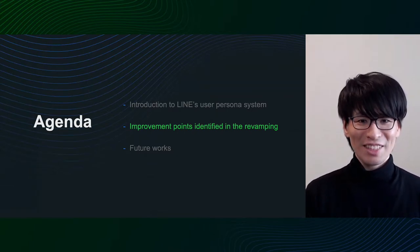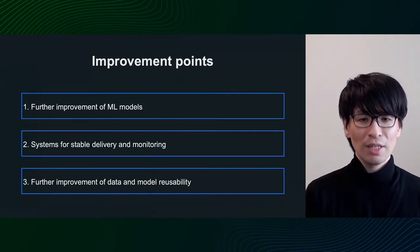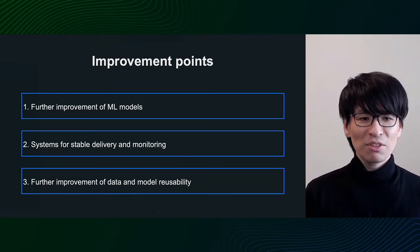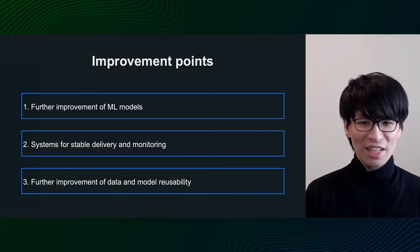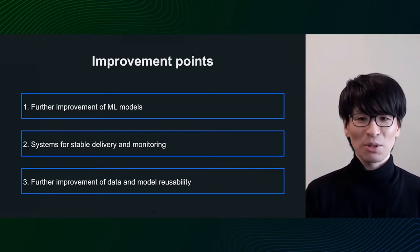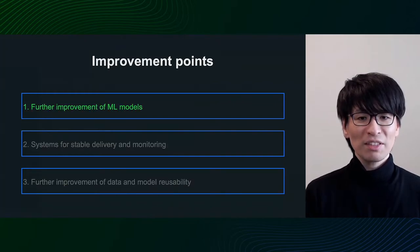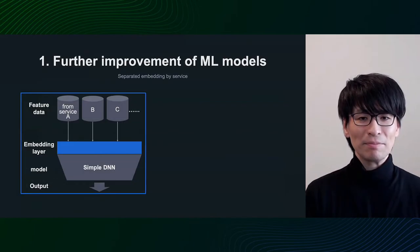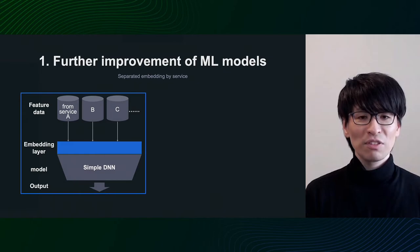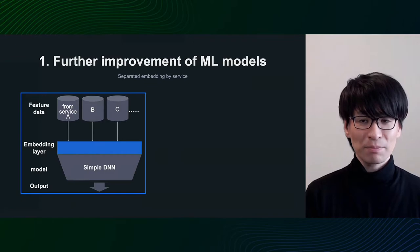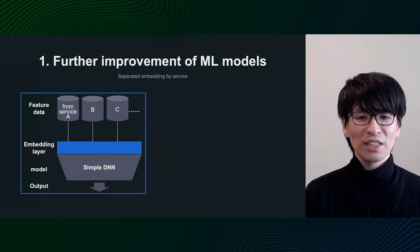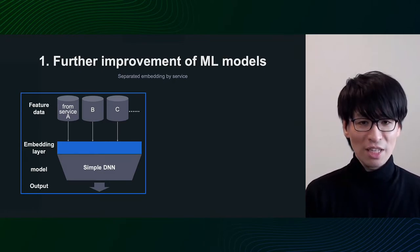Let's take a look at the improvements we made through the renewal process. There are three main categories of improvement points. The first is to further improve the machine learning model. The second is to improve the system for stable supply of estimated persona. The third is to further improve the reusability of data and models. As mentioned earlier, just after the renewal of the user persona model last summer, we used a simple deep neural network. The feature data collected across services was fed into a single embedding layer and the embedding was performed in batch for input to the model.